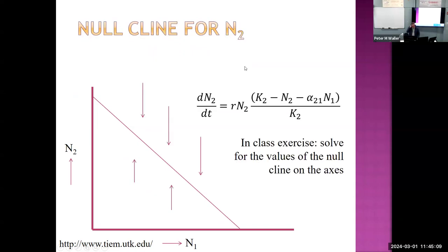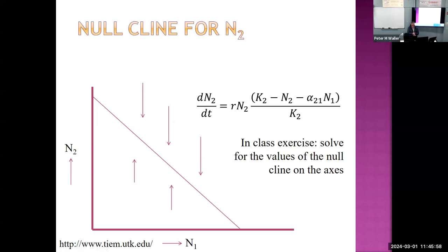This is the nullcline for N2. We have a nullcline for N1 and a nullcline for N2. The nullcline for N2 is where there is no increase or decrease in N2, so we set dN2/dt equal to zero and solve the expression in parentheses equal to zero. Set N2 equal to zero to find where the nullcline crosses the N1 axis, then set N1 equal to zero to find where the nullcline crosses the N2 axis.